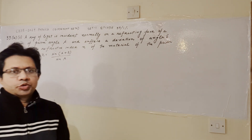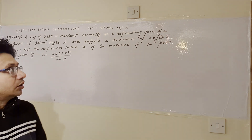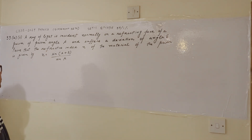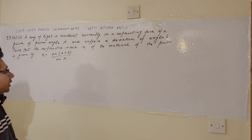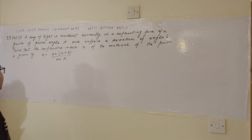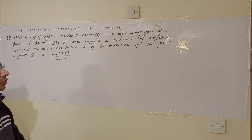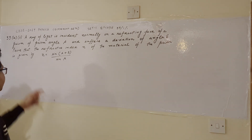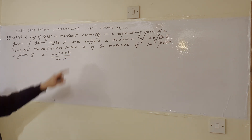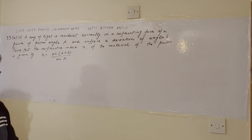Hello students, how are you? Hope you are doing well. The question is: a ray of light is incident normally on a refracting surface of a prism of prism angle a, and suffers a deviation of angle delta. Prove that the refractive index n of the material of the prism is given by n equals sin(a + delta) upon sin(a).